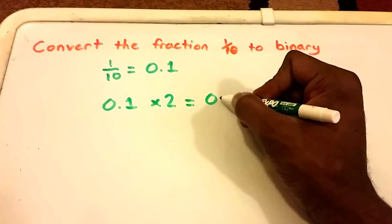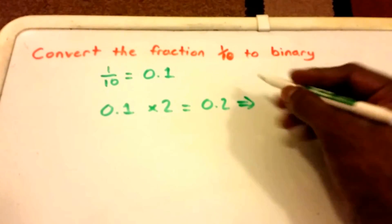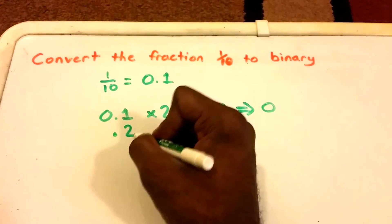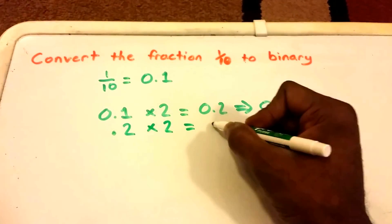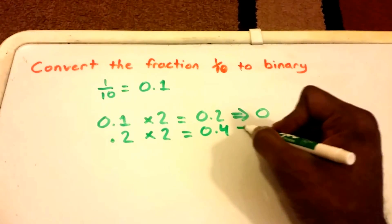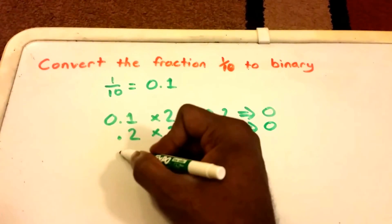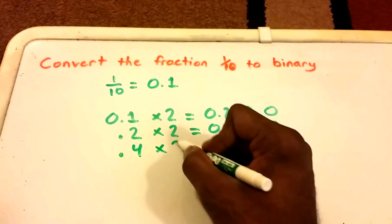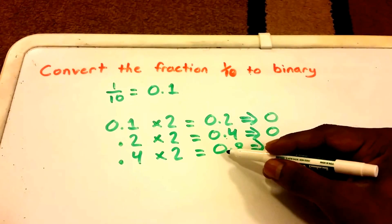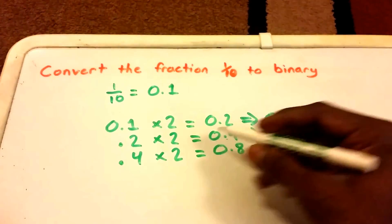To convert, we take 0.1 and multiply it by 2, so we get 0.2. We record the digit in front of the decimal point, which is 0. Then we take the 0.2 and multiply it by 2, getting 0.4 — we record 0. Then we take 0.4, multiply it by 2, and we get 0.8, and again record the digit in front of the decimal point, which is 0.